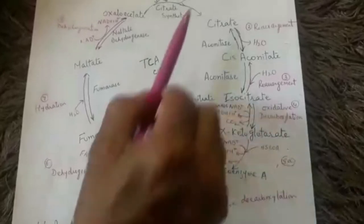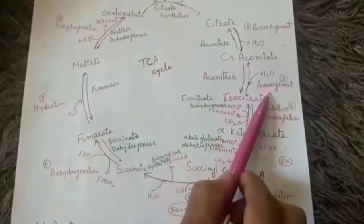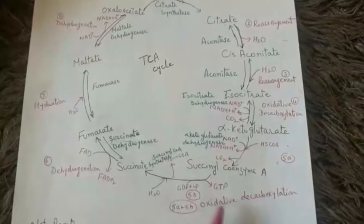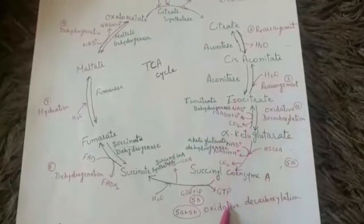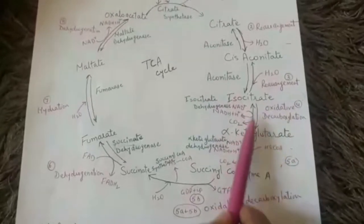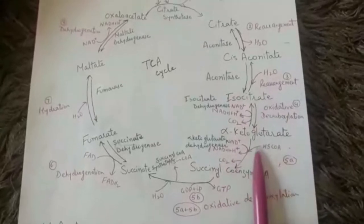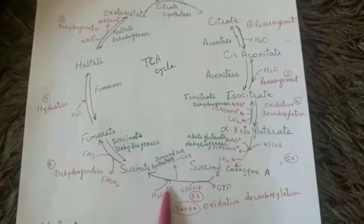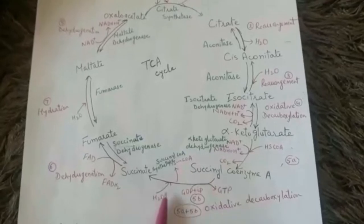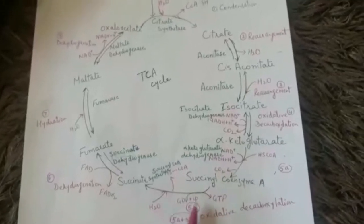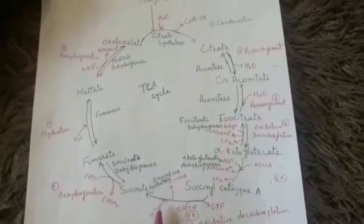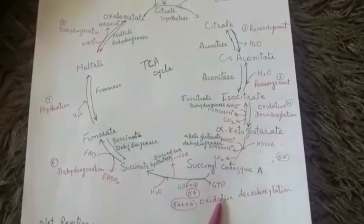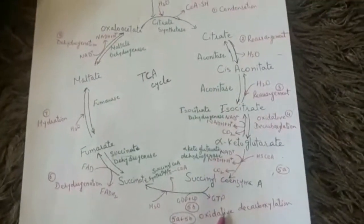So far we have completed five steps: condensation, two rearrangements, and two oxidative decarboxylation steps. The key difference in the fifth step is that coenzyme A temporarily participates and is then lost, with the energy produced used to synthesize GTP. This is the only cycle where GTP is formed.